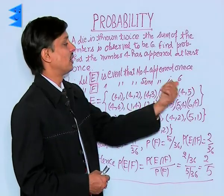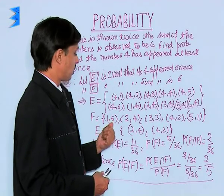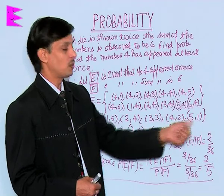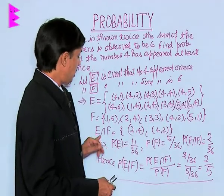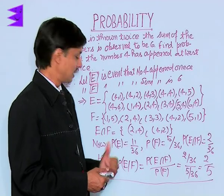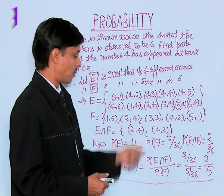F is the event that the sum is 6. F consists of (1,5), (2,4), (3,3), (4,2), (5,1). E intersection F is the common elements: (2,4) and (4,2).